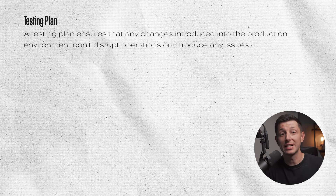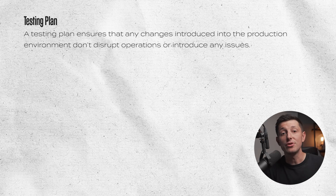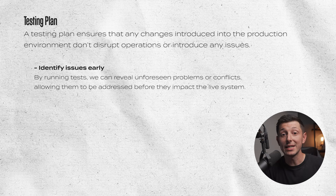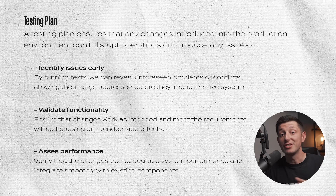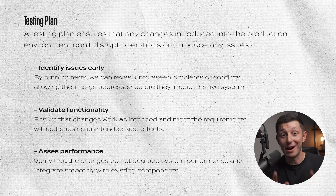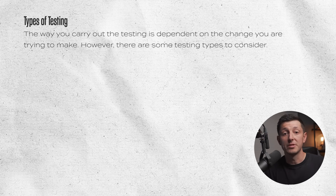Once we have our stakeholders and there are no objections, it's time to think about how we're going to test our change. Testing is very important in change management — it ensures that changes introduced to the production environment don't disturb operations or introduce issues. By running tests we can identify unforeseen problems or conflicts early, validate functionality to ensure changes work as intended without unintended side effects, and assess performance to verify that changes don't degrade system performance.